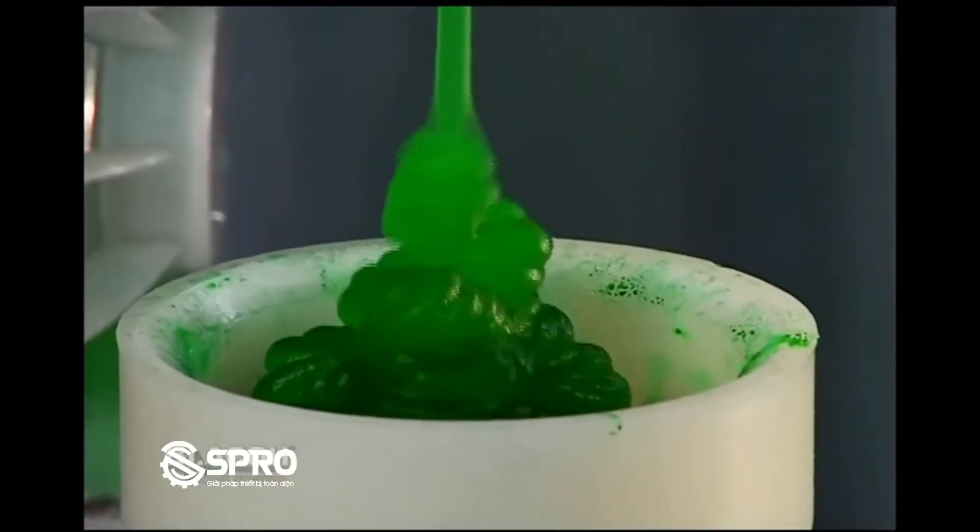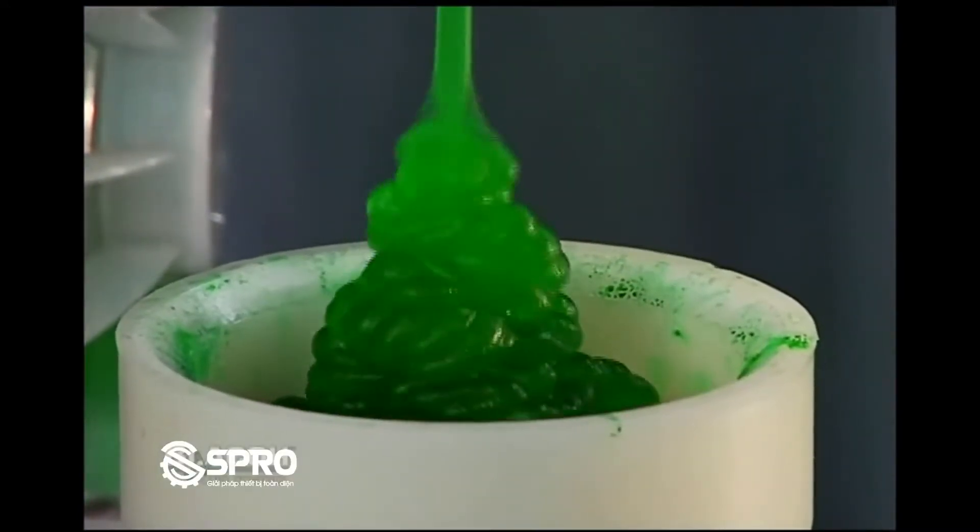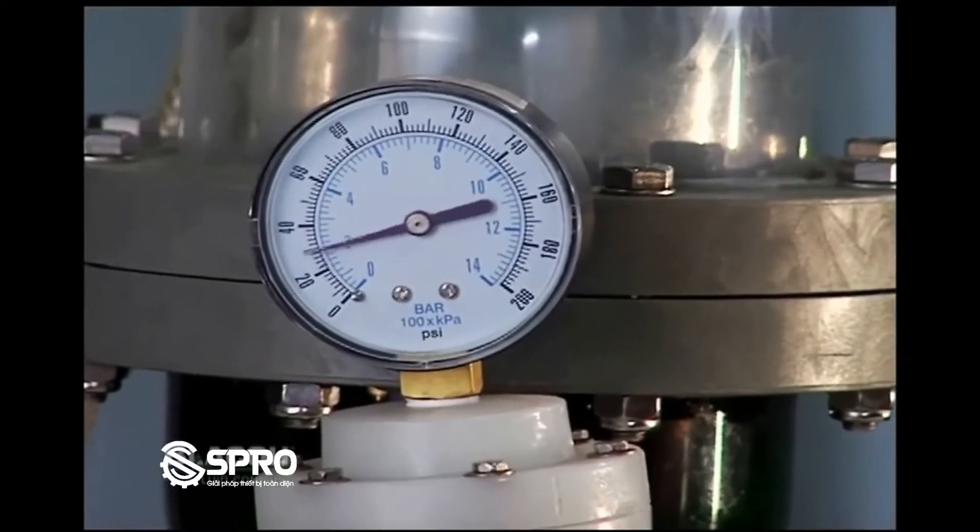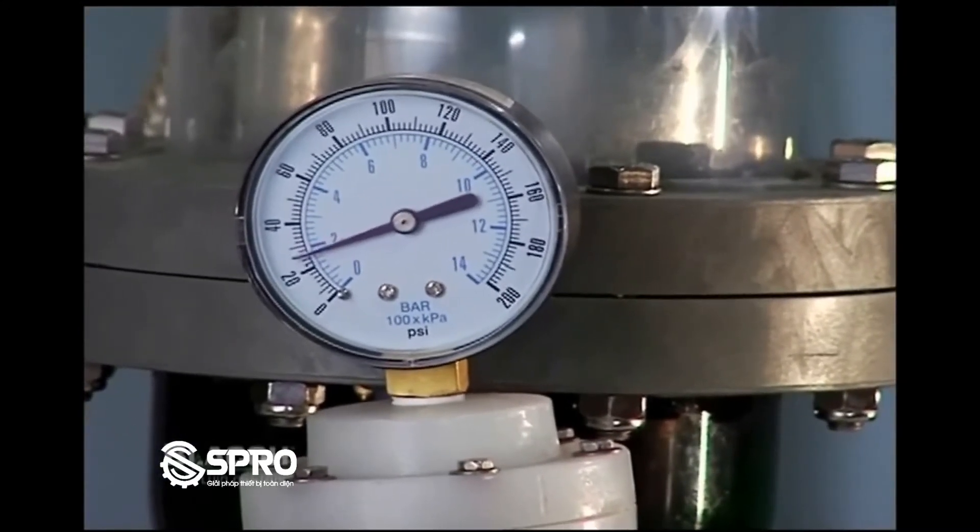The discharge manifold with the benefit of the pulsation dampener has a smooth steady flow which can also be observed on the gauge as low pressure variations.